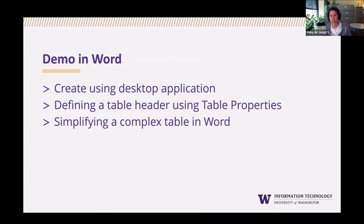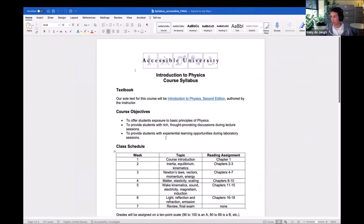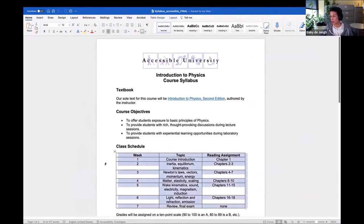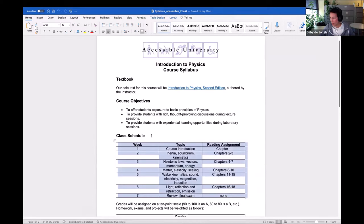Now a demonstration in Word. Make sure that when you're creating tables in Word you're using the desktop client. The online version of Word can't create accessible tables, as there's no way to view the table properties options and define the table header. It's really important that if you're creating Word documents with tables, you're creating them from the desktop client. Here we have our demonstration document with a simple table — three columns and eight rows.